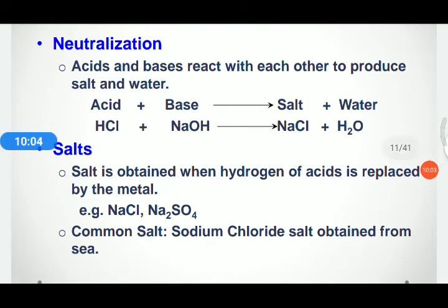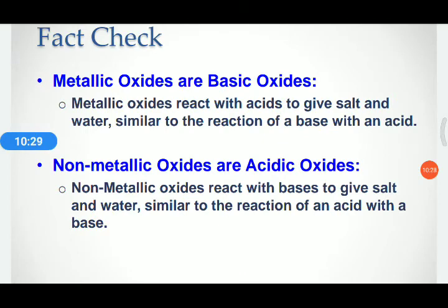Salt is obtained when the hydrogen of an acid is replaced by a metal. NaCl is a salt — it is common salt we use in our food. In the property of acids, we discussed the reaction of metal oxides with acid: when metal oxide reacts with acid it produces salt and water. This means metal oxides are basic in nature.